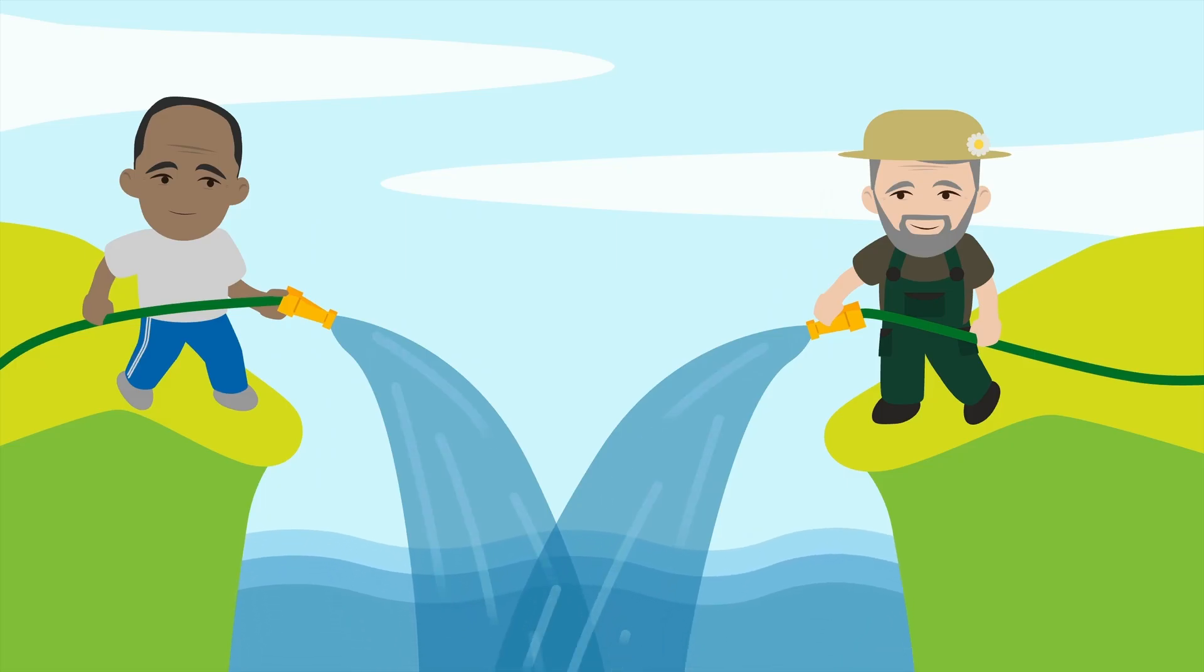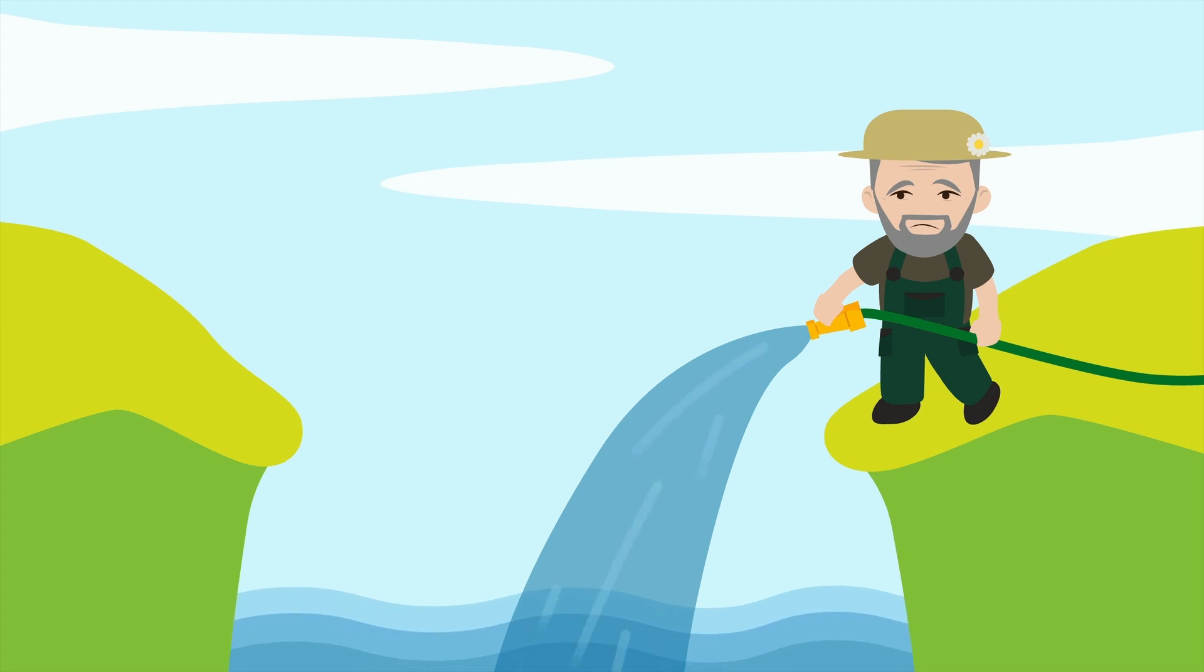Imagine someone filling up a pool. In the first instance, they have a friend available with another second hose, so filling up the pool will be much faster. In the second instance, they only have one hose available, so filling up the pool will be much slower.